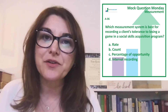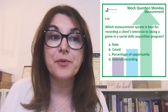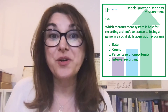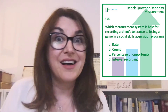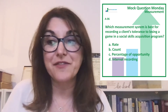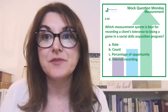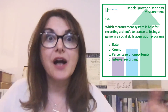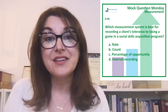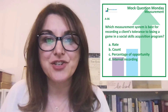You wouldn't use rate or count because even a very high number of tolerating could be misinformative. For example, let's say the person tolerated 10 times — but what if there were 100 games? That wouldn't be evident in rate or count information.